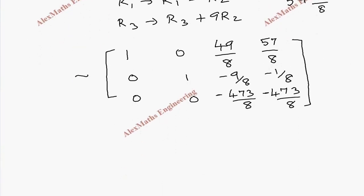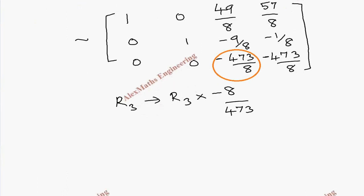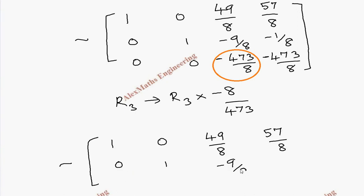We now have the augmented matrix but still have not converted it into a diagonal matrix. To convert it, we need a 1 in the R3 pivot position, and using that 1 we can make the above two elements zero. For this, I take row 3 and multiply it by minus 8/473, so it becomes 1. R1 and R2 are written as they are. After multiplying by minus 8/473, row 3 becomes: 0, 0, 1 — the reciprocal and minus sign cancel, giving 1.